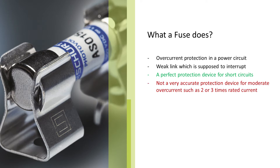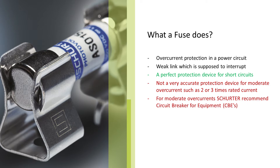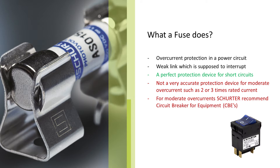However, it is not a very accurate protection device for moderate overcurrents such as 2 or 3 times rated current — what we would typically experience with a power overload of an electrical motor. For such moderate overcurrents, Schurter recommends using a circuit breaker for equipment, also known as a CB.